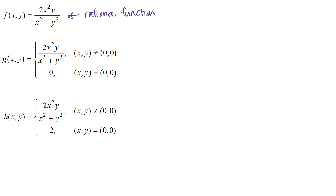There's technically a theorem that says a rational function is continuous — the function output is equal to the limit at every point in the domain of the function. You can extend that to multi-variable functions here. I have a polynomial in the numerator and denominator, so I have a rational function and this function is continuous on its domain. I just need to think about what that domain is.